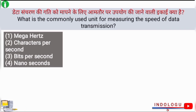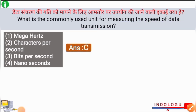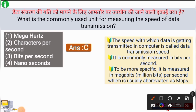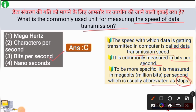Next question: What is the commonly used unit for measuring the speed of data transmission? The speed with which data is transmitted in a computer is called the data transmission speed. It is commonly measured in bits per second, and more specifically, it is measured in megabits per second, which is usually abbreviated as MBPS.